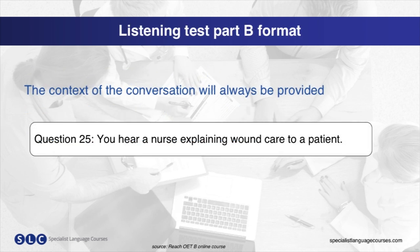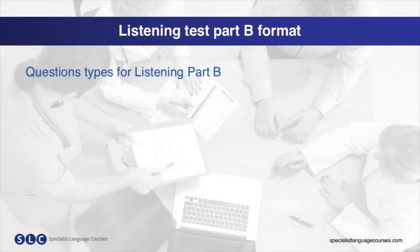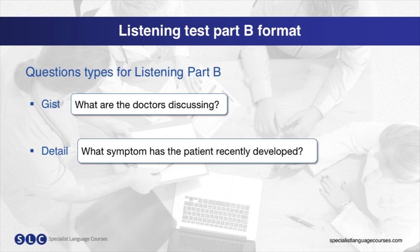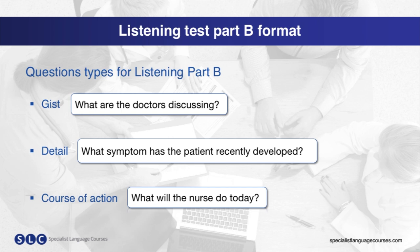The context of the conversation will always be provided. Let's take a look at some example question types you might receive in Listening Part B. You may have a gist question where you need to focus on the overall message of the audio — for example, 'What are the doctors talking about?' You could also have a detail question such as 'What symptom has the patient recently developed?' where you listen for more specific information. Another question type is course of action, where you listen for what the healthcare professional will do at a certain point in time — for example, 'What will the nurse do today?'